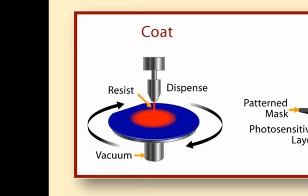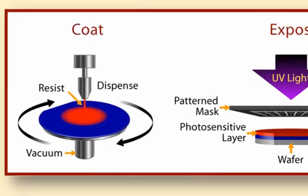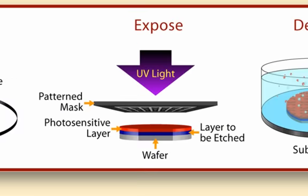In coat, the surface of the wafer is coated with photosensitive material called photoresist. In expose, the resist is exposed using a light source such as ultraviolet or UV or X-ray.